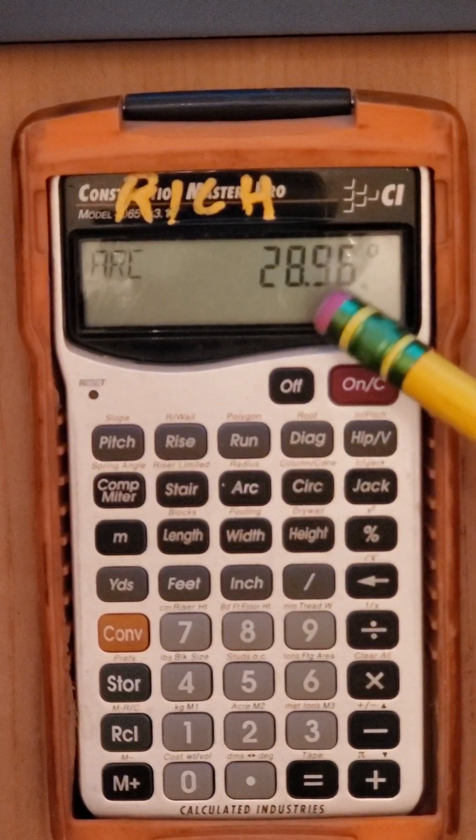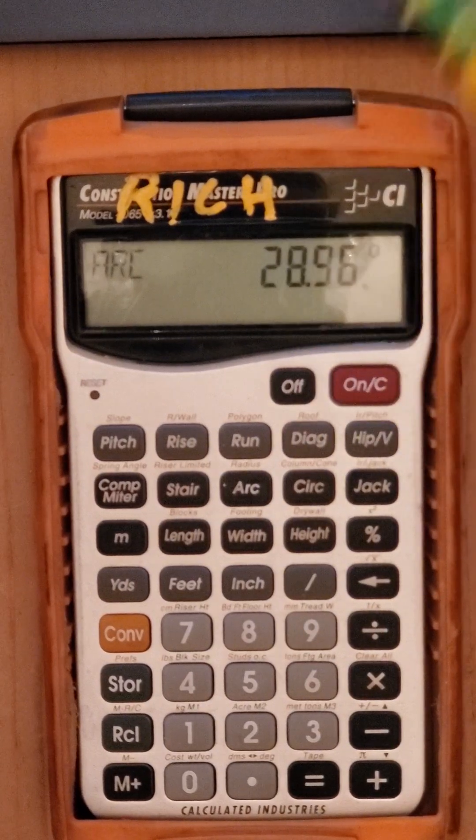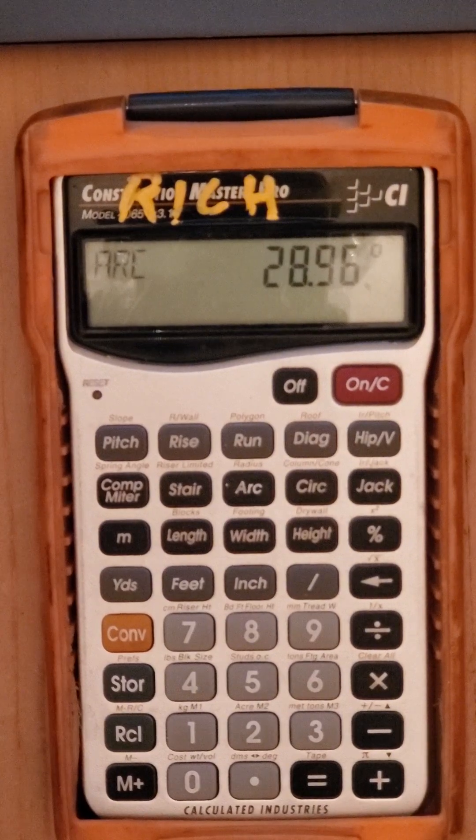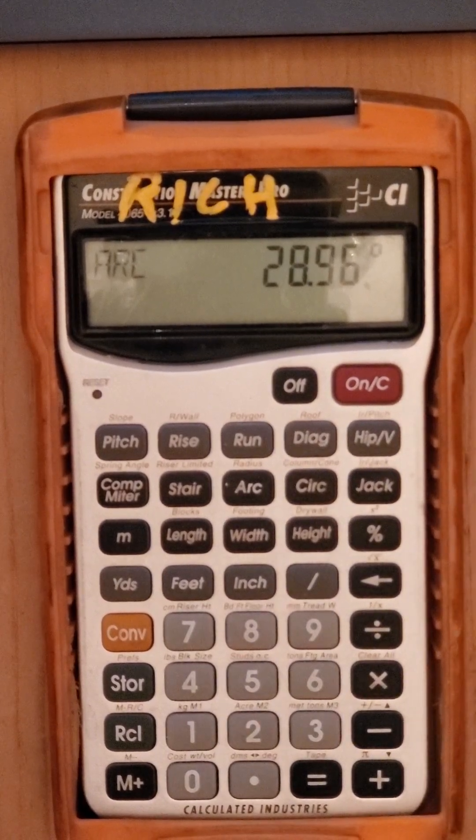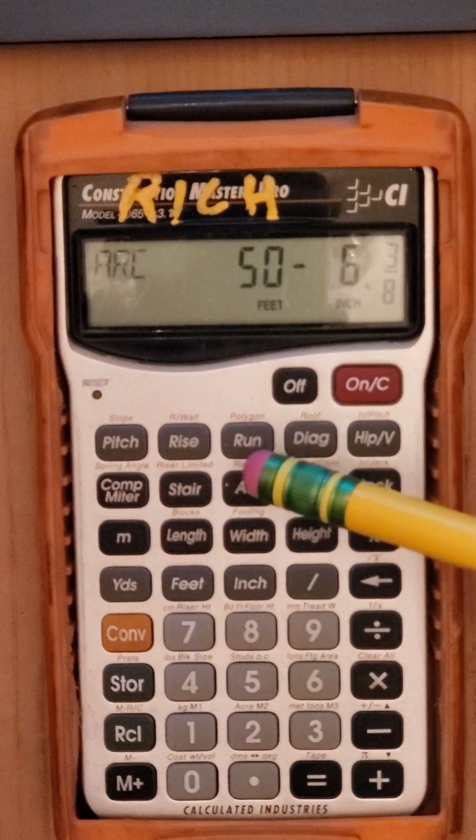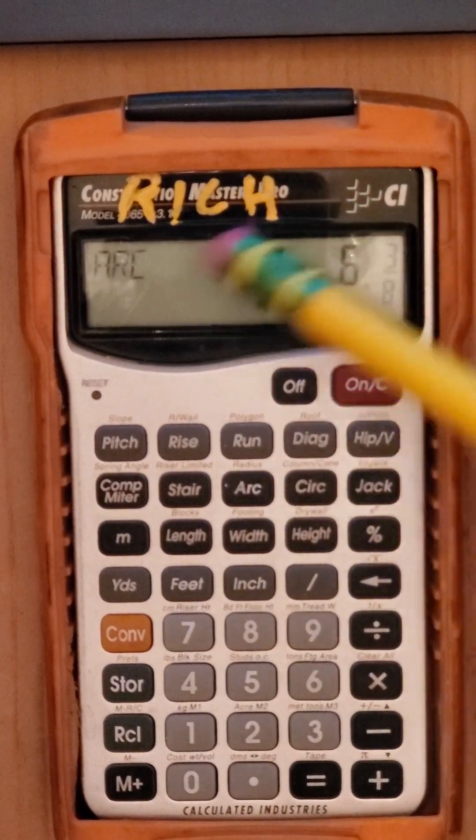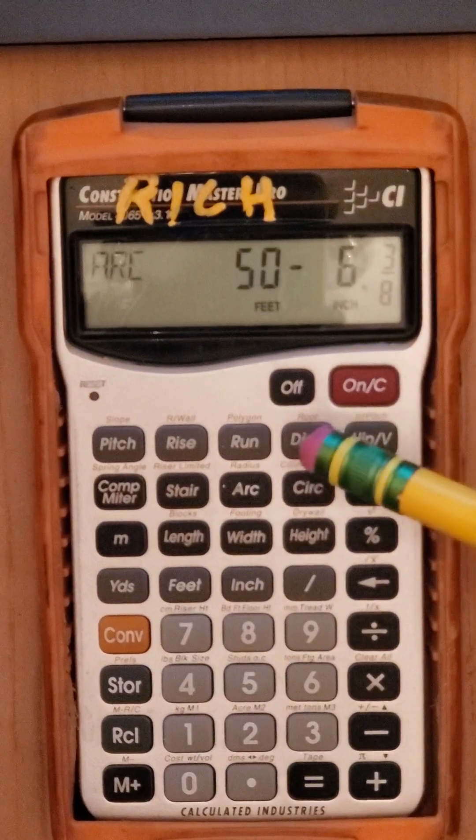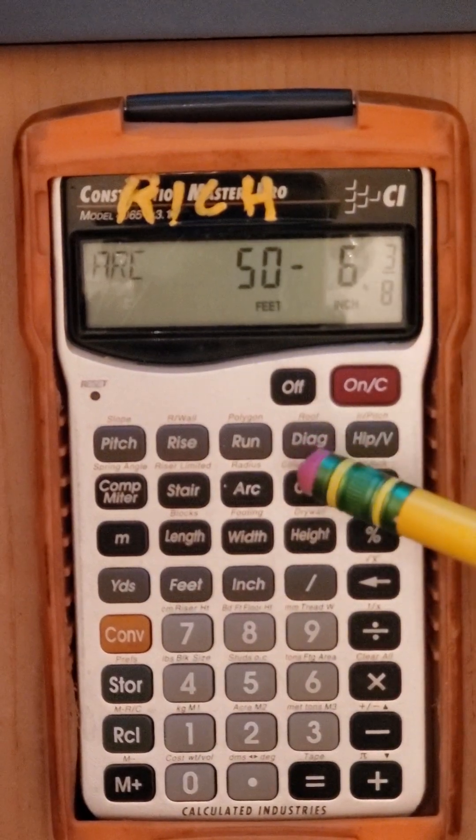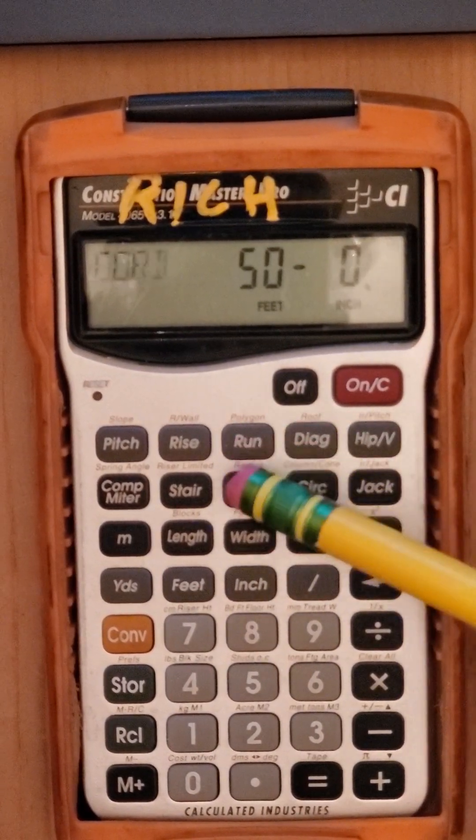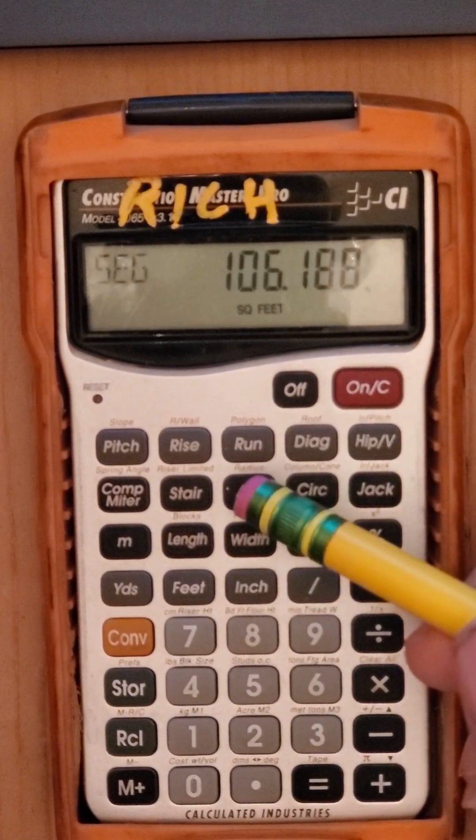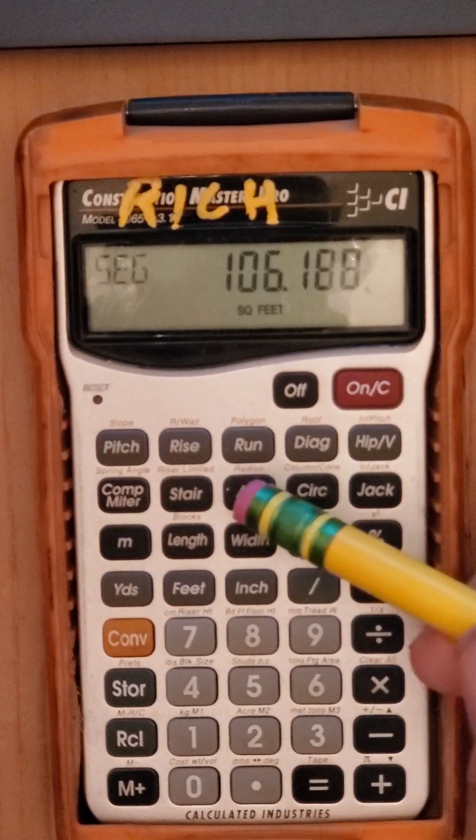And then that's it. You hit arc. It tells you the degrees. That's the arc angle. I'll show you where the chord is. I'll do it later. Hit arc again, it tells me the arc length. That's the length of the arc between the chord there. Arc, arc. And then that tells you the area that's inside the segment above the arc, above the chord to the circumference.